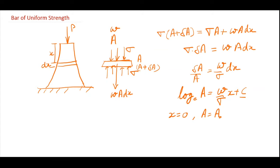So when I put it in equation 1, I will get log base e A naught is equal to constant. So my equation becomes log base e A by A naught is equal to w by sigma times x.